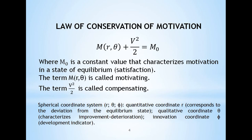This is called the law of conservation of motivation. Note that the proposed model is built in the space of states, which in the spherical coordinate system are described by the quantitative coordinate r, qualitative coordinate θ, and innovation coordinate φ. It can be seen from the equation that motivation depends on quantitative and qualitative changes in the state of the economic entity.